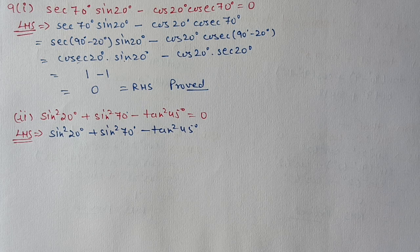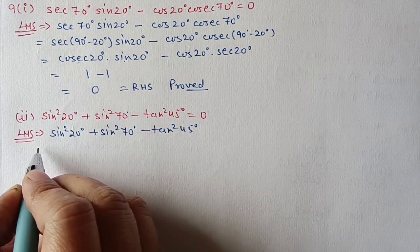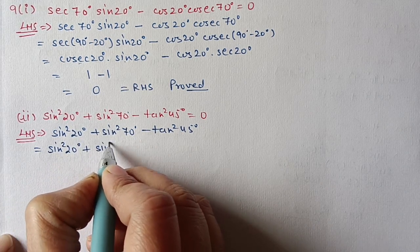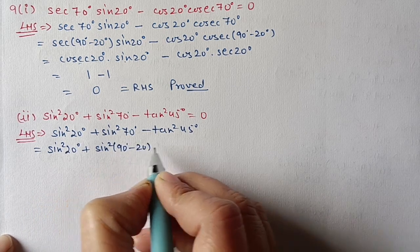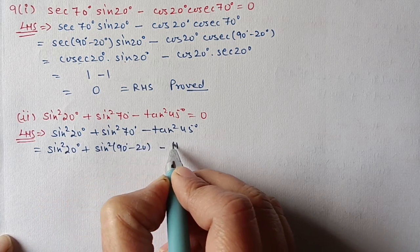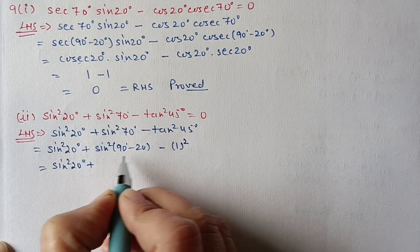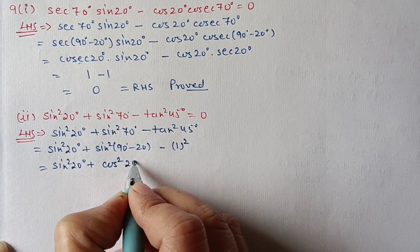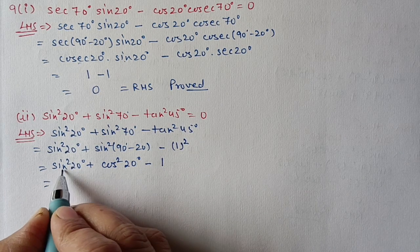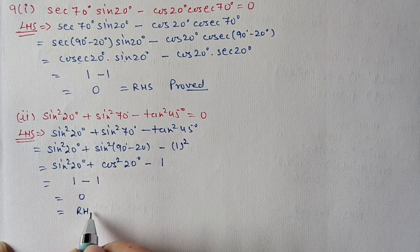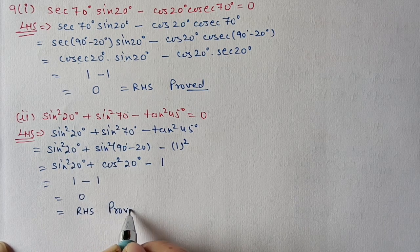Second part of question 9: prove sin²20 + sin²70 − tan²45 = 1. From the first two terms, any one we have to change. sin²20 as it is and sin²70 = sin²(90−20) = cos²20. tan45 = 1, so tan²45 = 1. We get sin²20 + cos²20 − 1 = 1 − 1 = 0... wait, sin²θ + cos²θ = 1, so 1 − 1 = 0. Hence it is proved.